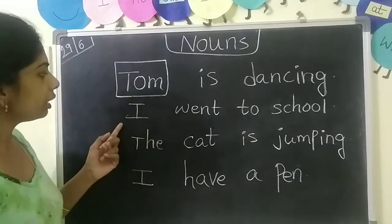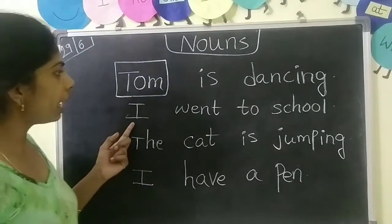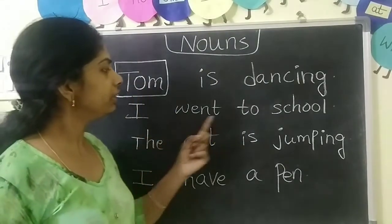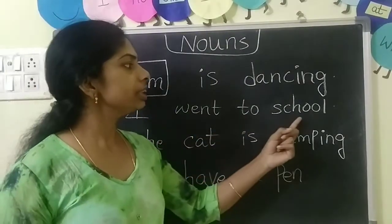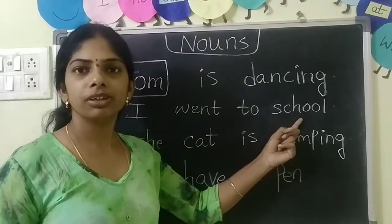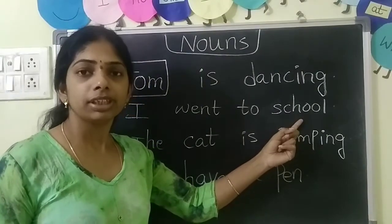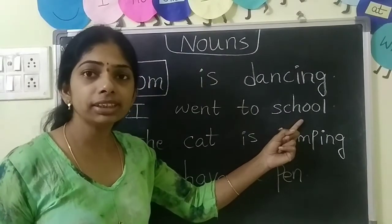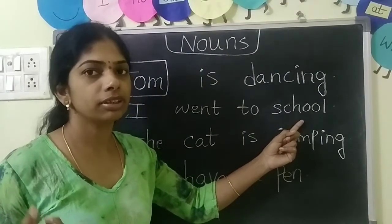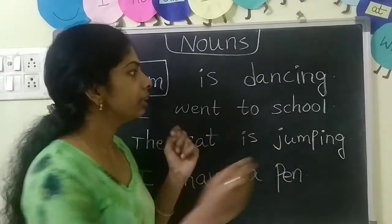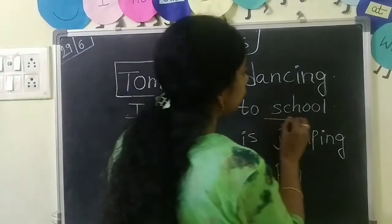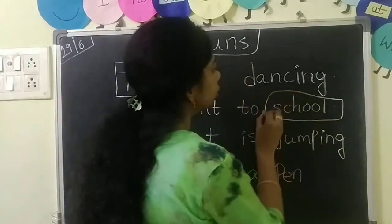What is the second one? I went to school. Is there any place name? Yes — school is a place name. So it is a noun in this sentence.